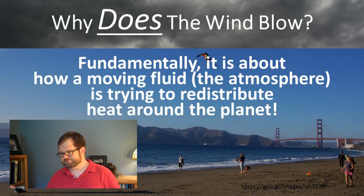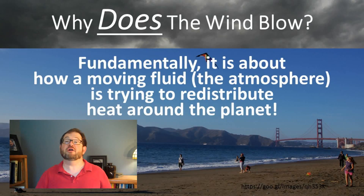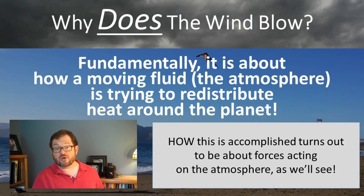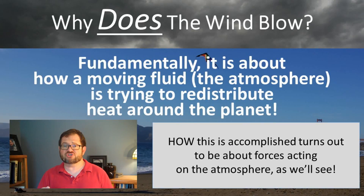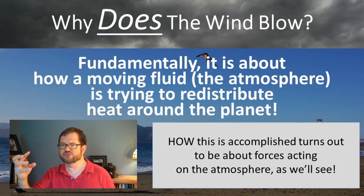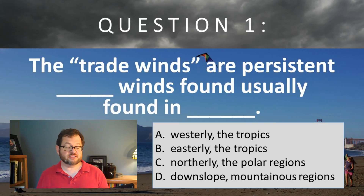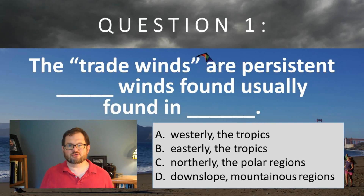If someone asks you why the wind blows, fundamentally it's about how a moving fluid — in this case the atmosphere — is trying to redistribute heat around the planet, transporting heat from where there's too much of it in the tropics to where there's not enough in the poles. How it actually does that on any given day we're going to get into by talking about forces and Newton's second law to describe what causes the wind to blow the way it does. That's this lecture. Quick question: the trade winds are persistent blank winds usually found in the blank — westerly the tropics, easterly the tropics, northerly the polar regions, or downslope mountainous regions?